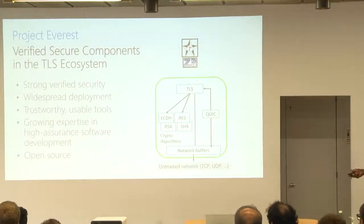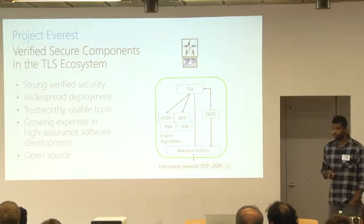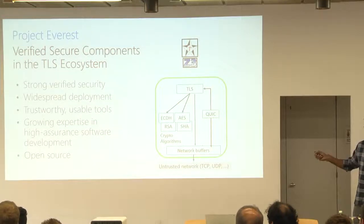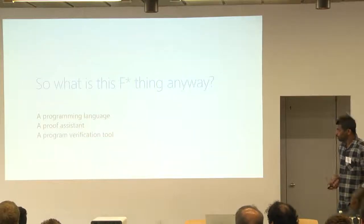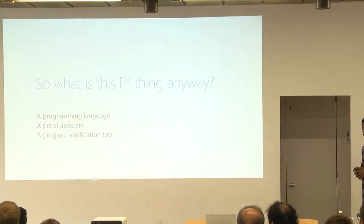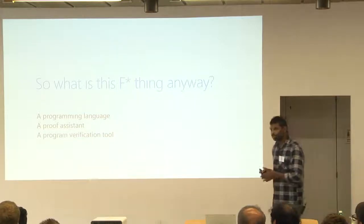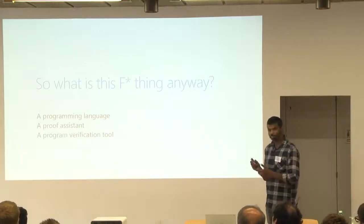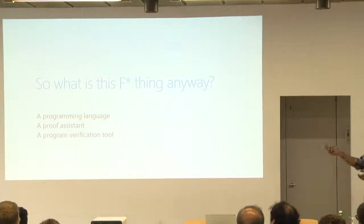So for the rest of this talk, I'm going to focus more on the programming languages tools that we use to build this secure stack. So what's this F-star thing anyway, right? So it's a programming language. It's a proof assistant. It's a program verification tool. And you're thinking, well, there's plenty of those things around already. Why do we need another one?